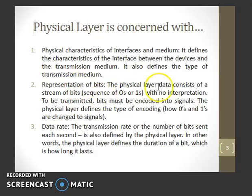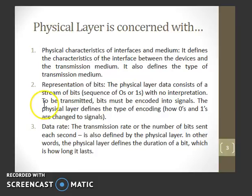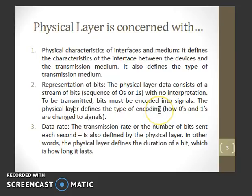The physical layer data consists of a stream of bits with no interpretation — it can be a sequence of zeros or ones to be transmitted. Bits must be encoded into signals, and the physical layer defines the type of encoding, that is, how zeros and ones are changed to signals.